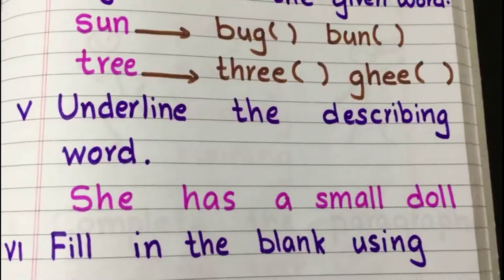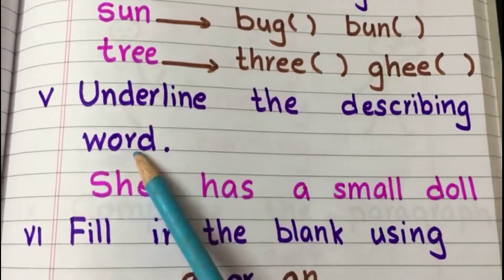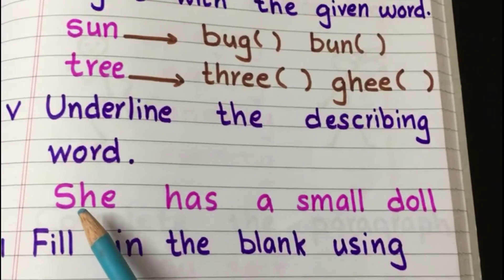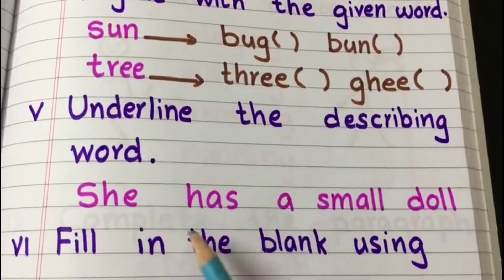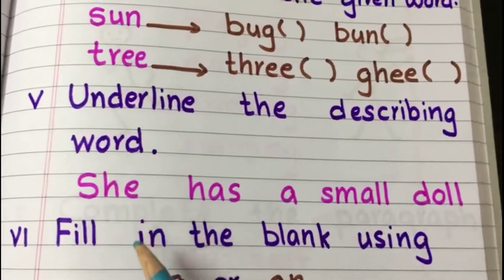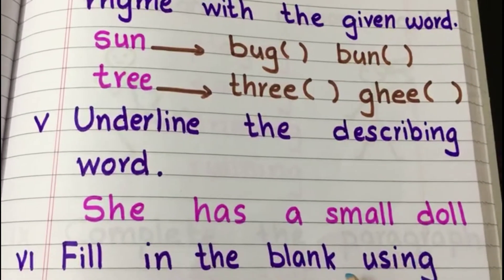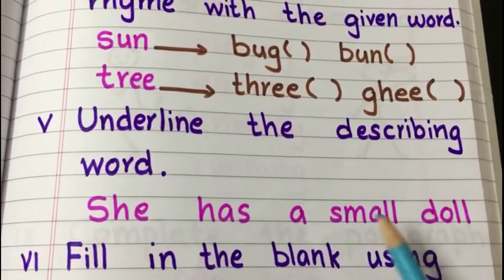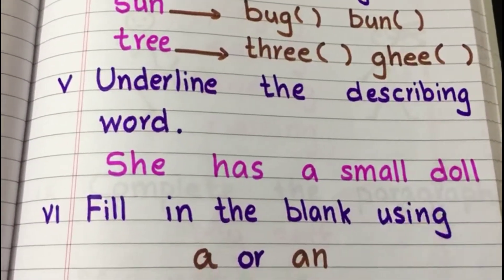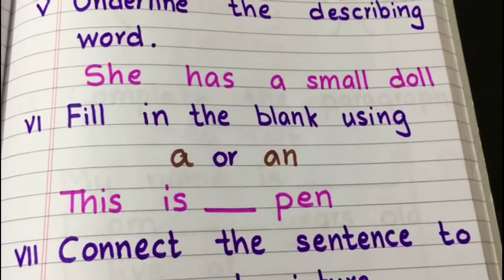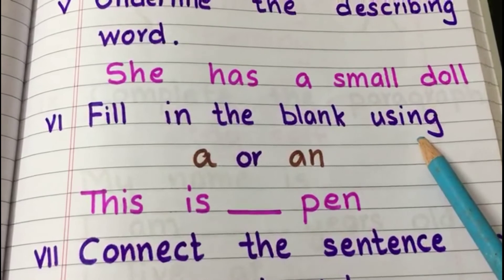This is our fifth question. The question is: underline the describing word. Here we have a sentence: 'She has a small doll.' Ask your child to find the describing word from the given sentence. In 'She has a small doll,' which is the describing word? Small. The word small is the describing word, so ask your child to underline the word small.